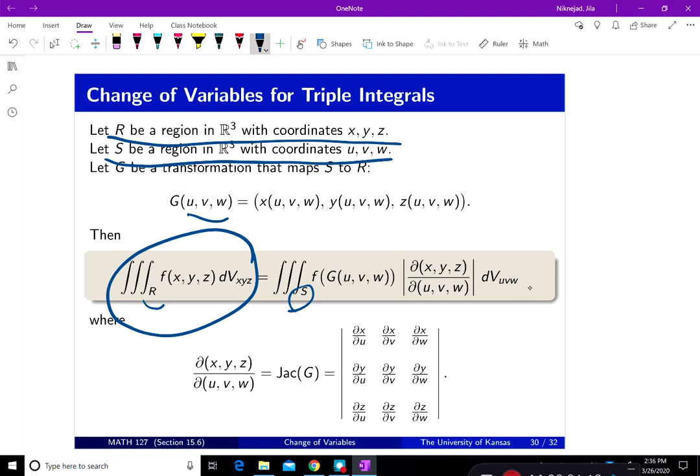Then there is the Jacobian, the absolute value of the Jacobian that is given here. And then we have to convert x, y, and z as functions of u, v, and w in here. Now what's that Jacobian thing? The Jacobian this time, instead of ∂(x,y)/∂(u,v), you have ∂(x,y,z)/∂(u,v,w).